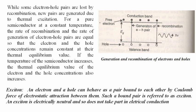This picture shows generation and recombination of electrons and holes. While some electron-hole pairs are lost by recombination, new pairs are generated due to thermal excitation at T greater than zero. For a pure semiconductor at constant temperature, the rate of recombination and the rate of generation of electron-hole pairs are equal, so the electron and hole concentration remains constant at their thermal equilibrium value. If the temperature of the semiconductor increases, the thermal equilibrium value of electron and hole concentration also increases.